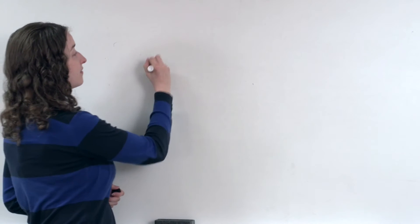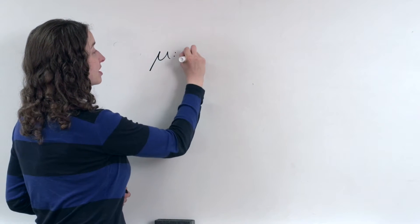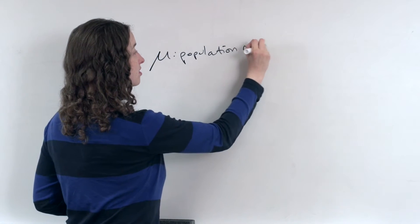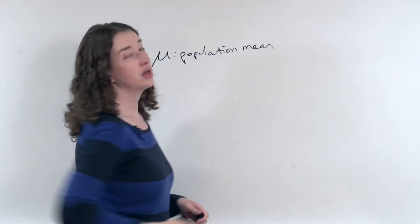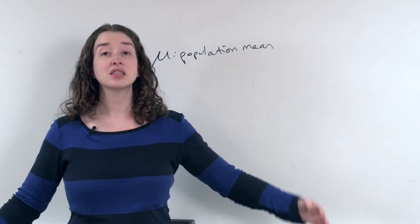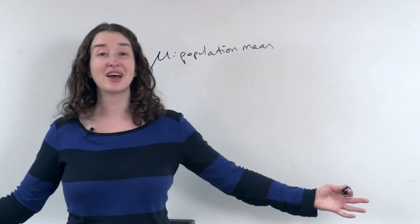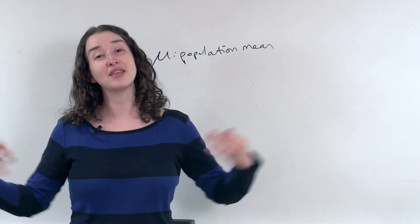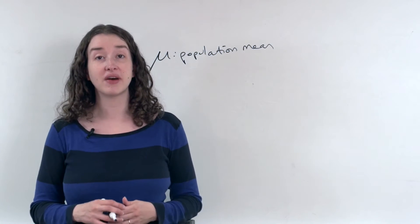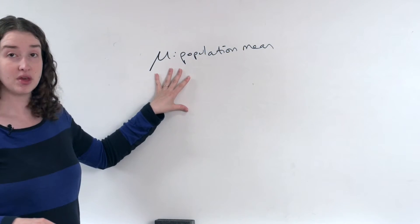We have previously defined mu as the population mean. In other words, if I took all the values in the entire population, somehow if I obtained those, added them all up and divided by the population size — divided by how many values there were — that would be called mu.